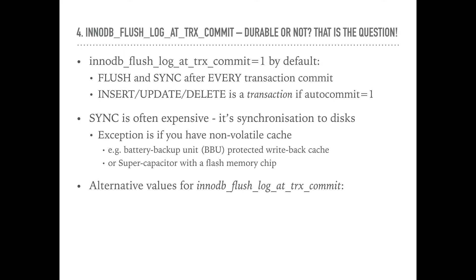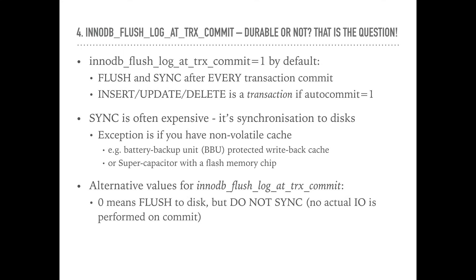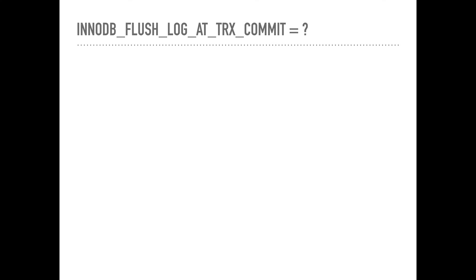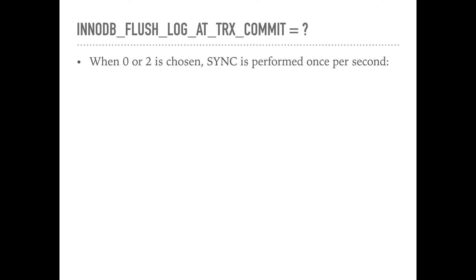Two alternative values for this variable are 0 and 2. 0 means flush to disk but do not sync — no actual I/O is performed on commit. 2 means don't flush and don't sync — again, no actual I/O is performed on commit. If you have it set to 0 or 2, sync is performed once a second instead.